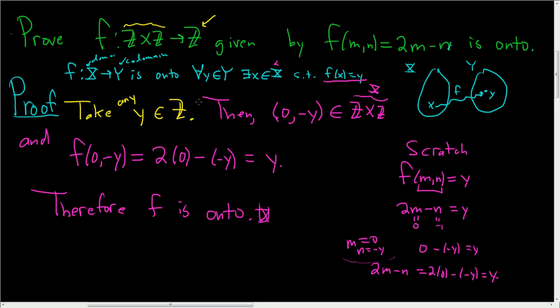Let me switch colors. To show it's onto, you have to take any y in Y, so we did that here. Then you have to show there exists x in capital X. This is where you go to the side and say, what do I want? I want x such that f of x is equal to y. So this is your x here, and then here's your y.